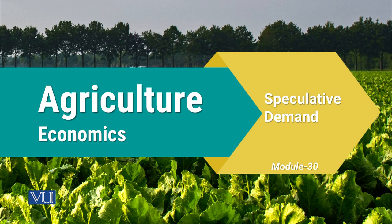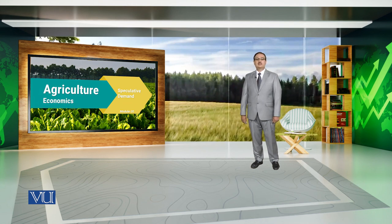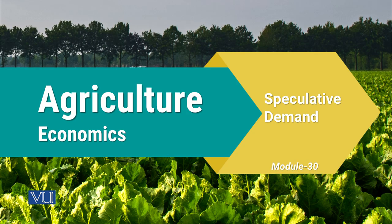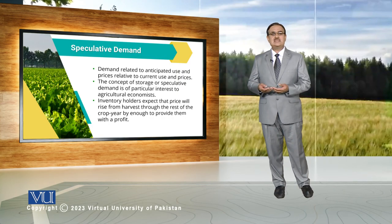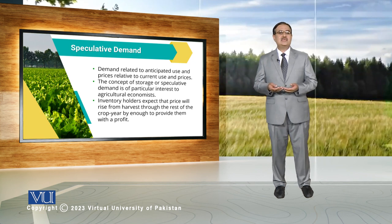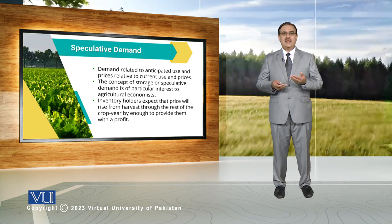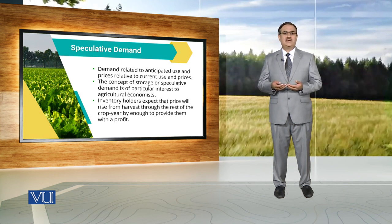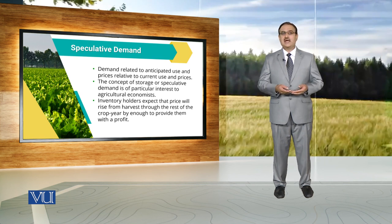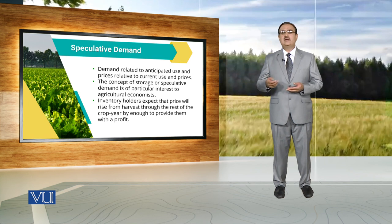Module 30: Speculative Demand. When we talk about demand, we usually talk about demand of a commodity for its current use. But in real life, there is a demand for a commodity that relates with its anticipated use — its future use. Whenever we discuss the future use of a particular commodity, we have to compare prices in the current time period with prices in the future time period.